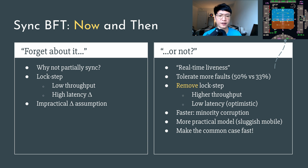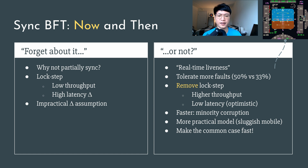Moreover, malfunctioning chips could emit random signals as outputs even if they are not hacked, and thus Byzantine faults exactly capture this property. However, for a more popular use case such as blockchains nowadays, the performance issue caused by lockstep execution of synchronous protocols is less ideal, and the delta assumption may not always hold. This inspires us to borrow something good from those asynchronous and partially synchronous protocols.